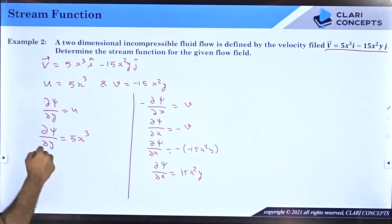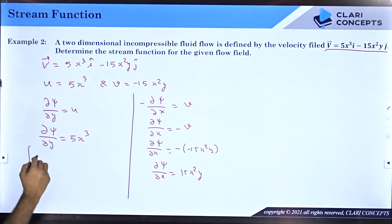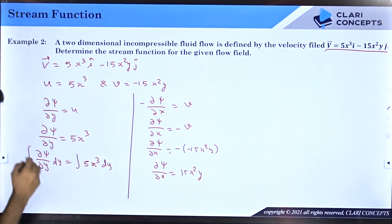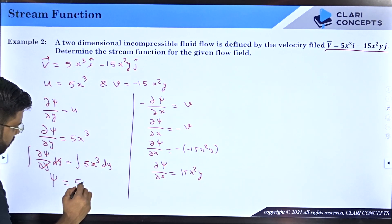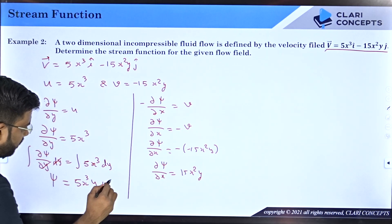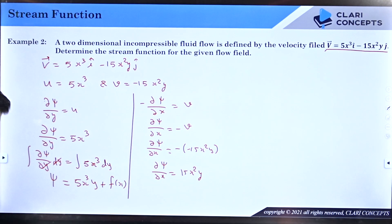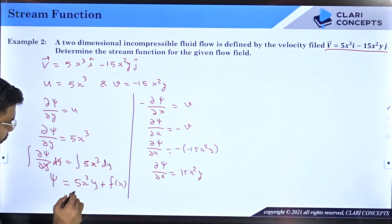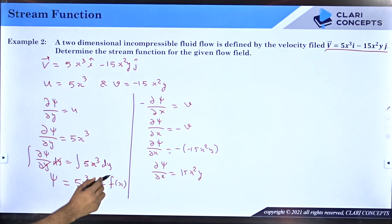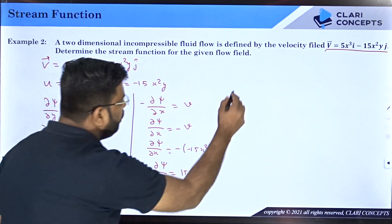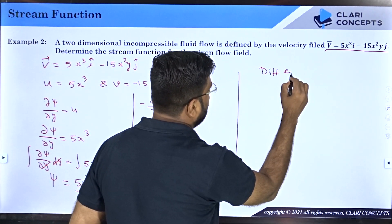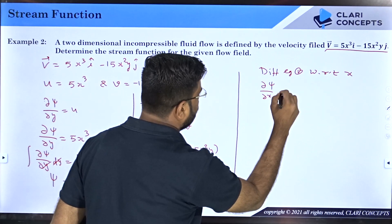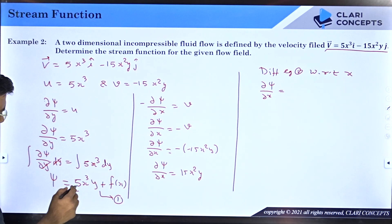Integrate ∂ψ/∂y = 5x³ with respect to y: ψ = 5x³y + f(x), where f(x) is an unknown function of x (since x is treated as a constant during partial integration with respect to y). Call this equation 1. Now partially differentiate equation 1 with respect to x: ∂ψ/∂x = 15x²y + df/dx.